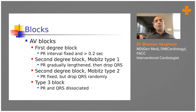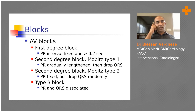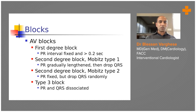If the PR interval from the beginning of the P wave to the beginning of the QRS complex is more than one large box — i.e., more than 0.2 seconds — it is first degree AV block. Values up to 0.24 seconds are sometimes considered acceptable, but anything beyond 0.24 seconds requires investigation, such as checking for beta blocker use.